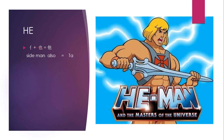Rén usually has two meanings: one is 'man,' and the other is 'side man.' Side man is only for the partial character form. So to make up 'he,' you combine side man plus another character, giving you tā — meaning he or him.